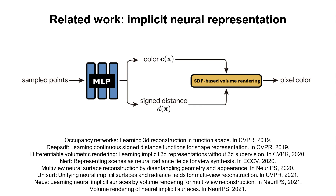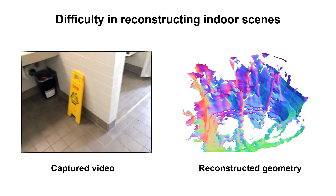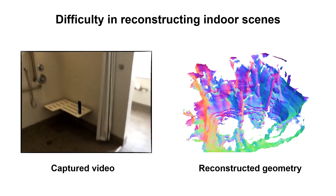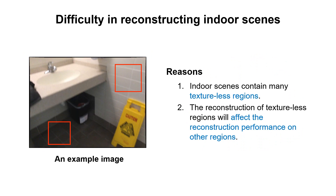because these regions make dense matching intractable and thus lead to incomplete reconstructions. Recently, some methods model 3D scenes as a neural implicit representation and learn it from images with differentiable renderers. In particular, neural SDFs use signed distance fields to represent scene geometry and render it into images based on volume rendering. While these methods can achieve high-quality reconstruction on texture-rich scenes, there is poor performance on indoor scenes. The main reason is that indoor scenes contain many texture-less regions, and the reconstruction of texture-less regions also affects reconstruction performance on other regions.